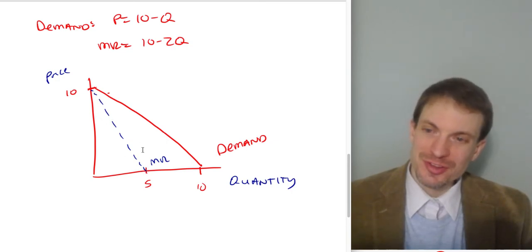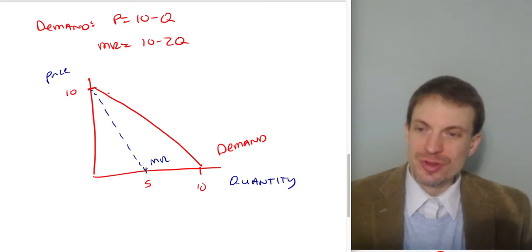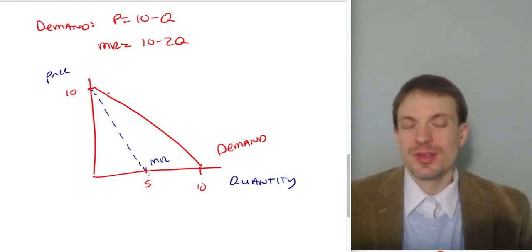Here, marginal revenue is positive, it's corresponding to something above 0. Here, marginal revenue, the graph of marginal revenue is exactly 0, and down here, marginal revenue is negative. Anyway,